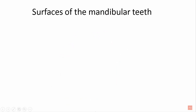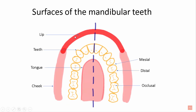Moving on to the surfaces of teeth. First we'll see the surfaces of mandibular teeth. The surface towards the lip is known as the labial surface. The surface towards the cheek is known as the buccal surface. When we talk about the labial and the buccal surfaces together, it is called the facial surface. The surface facing the tongue is known as the lingual surface. The surfaces of premolars and molars that come in contact with the opposite teeth while the jaws close is called the occlusal surface. The surface of the teeth facing towards the adjoining teeth in the same dental arch is called the proximal surface. Proximal surfaces can either be mesial — towards the midline — or distal — away from the midline.